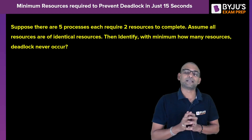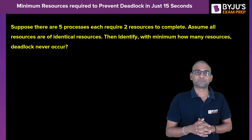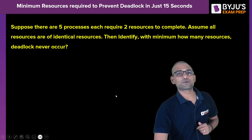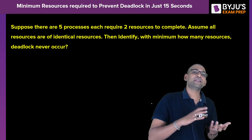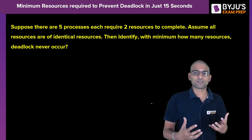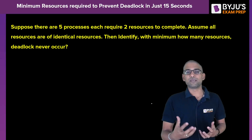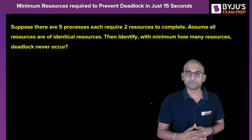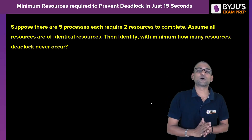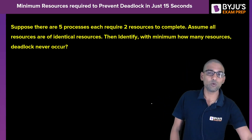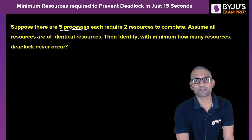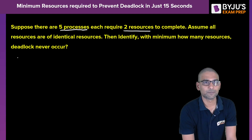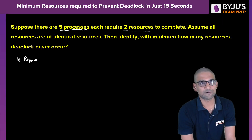Suppose we are given that there are five processes and every process requires two resources to complete. Assume all the resources are identical — any resource you give is okay, like five mice, four printers, two keyboards. With minimum how many resources can deadlock be prevented? Let's first work through it without any shortcut. If there are 10 resources, definitely deadlock can never occur.